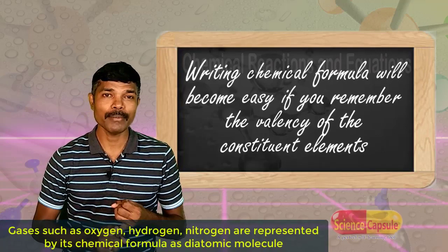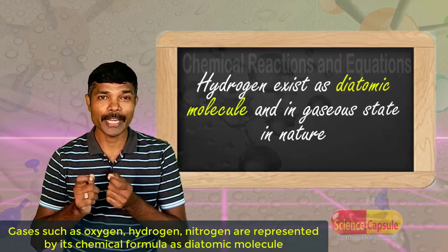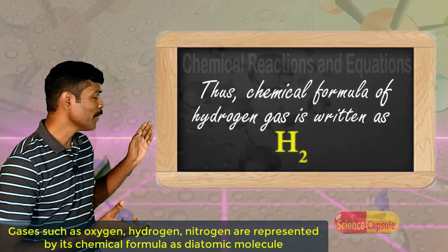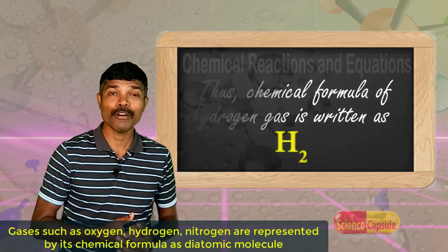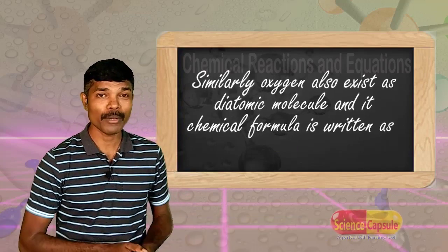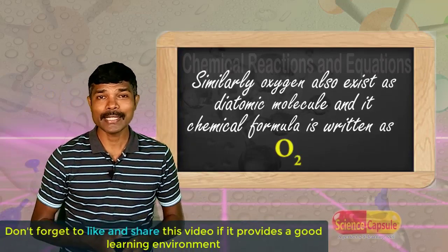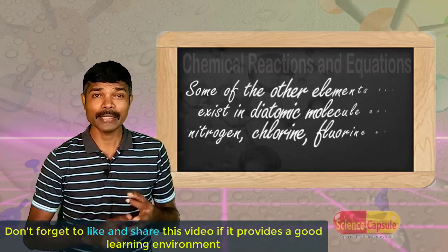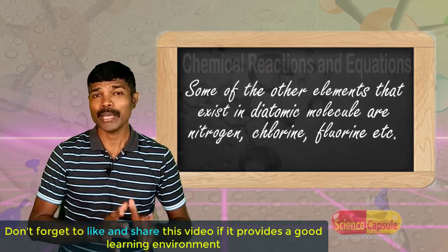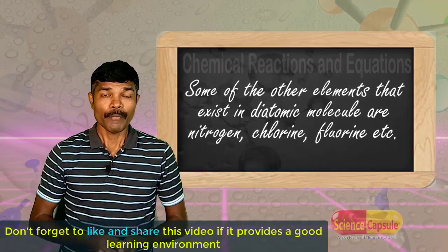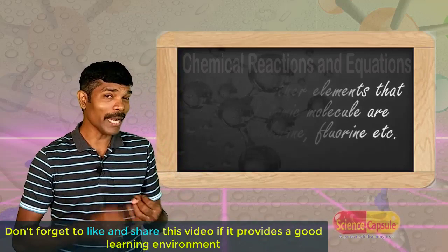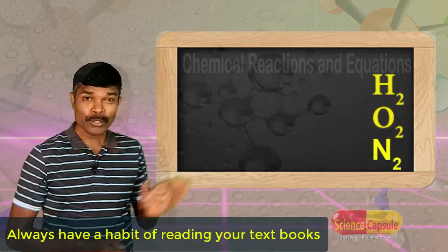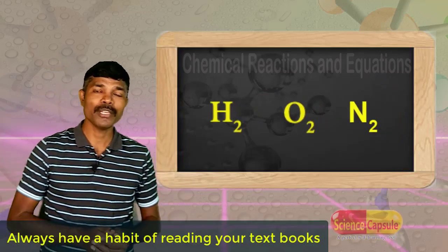Most gases available in nature are in the form of diatomic molecules. For example, hydrogen is always written as H2. Oxygen's chemical formula is written as O2, as oxygen cannot exist independently in nature. Nitrogen is written as N2. As you can see on the screen, these are the ways these molecules are to be written.